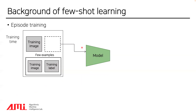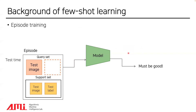There are some terminologies in few-shot learning. The given few examples are called the support set. The image or data without a label is called the query set. The episode means the group of query and support sets. The training method using episodes is called episodic meta-training. If we train a model with episodes, we can apply the same experimental setup at test time.